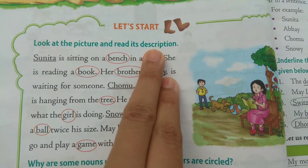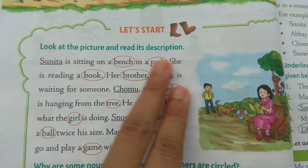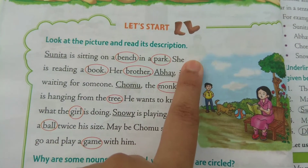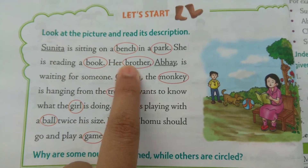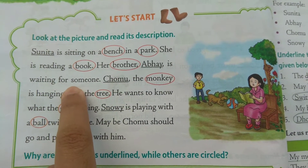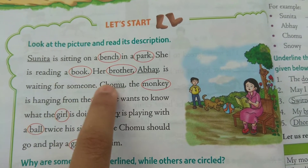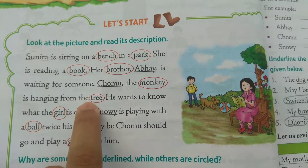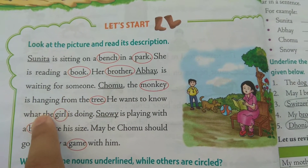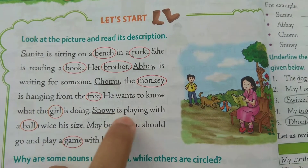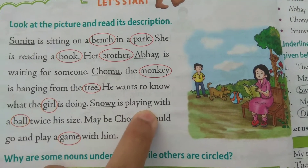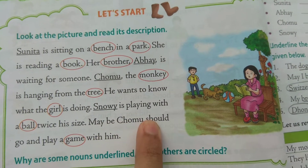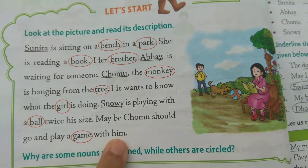Ab dekho. Look at the picture and read its description. Now: Sunita is sitting on a bench in a park. She is reading a book. Her brother Abha is waiting for someone. Chomu the monkey is hanging from the tree. He wants to know what the girl is doing. Snowy is playing with a ball twice his size. Maybe Chomu should go and play a game with him.